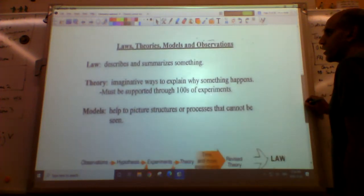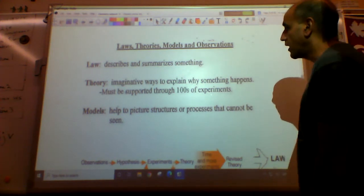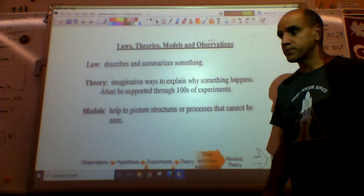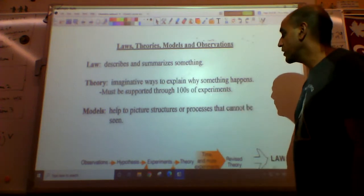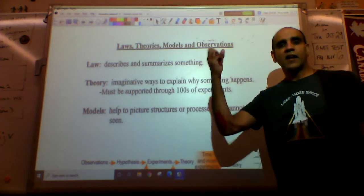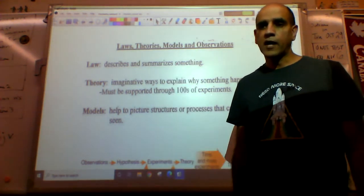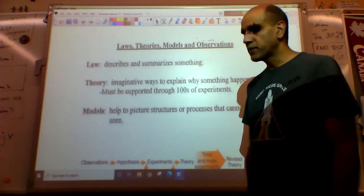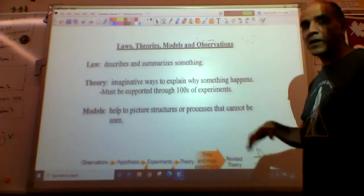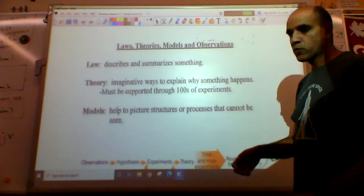We have a little bit of information about laws, theories, models, and observations. So, a law describes in several items as something. By the way, laws have to be mathematical as well. Theory is an imaginary way to explain why something happens, but it's got to have some proof. Like, I can come up with a theory that the Earth is shaped like a triangle. But unless I have any proof, it's not really a theory. It's just the meandering of some crazy old man like me. But if there's experiments to support it, then they start investigating even further.